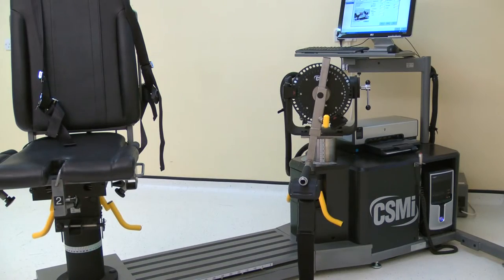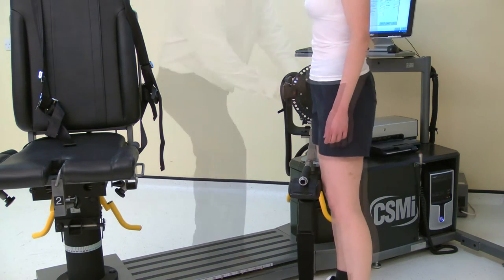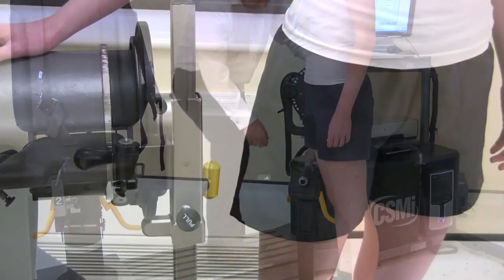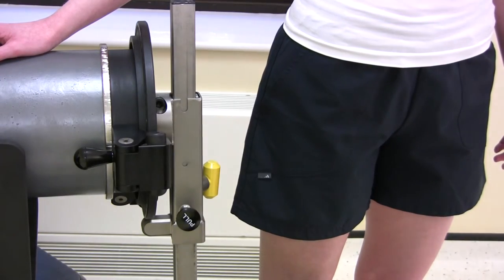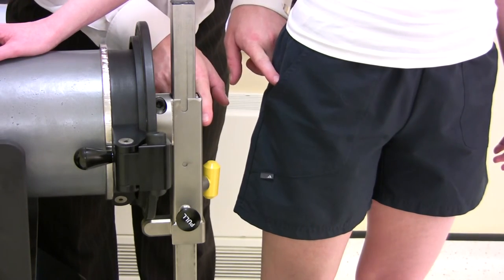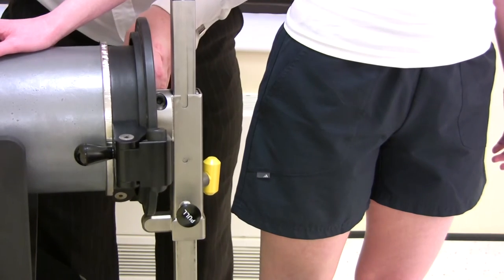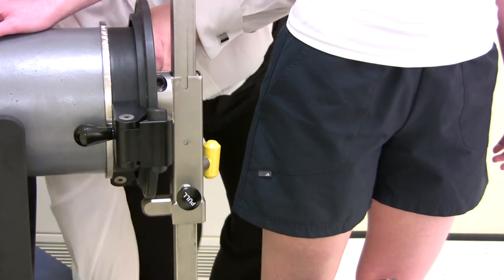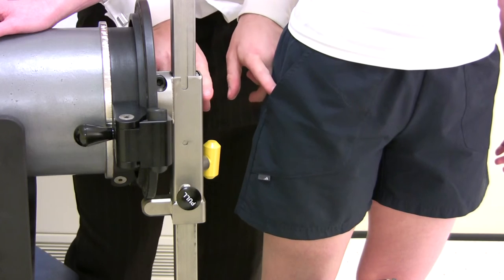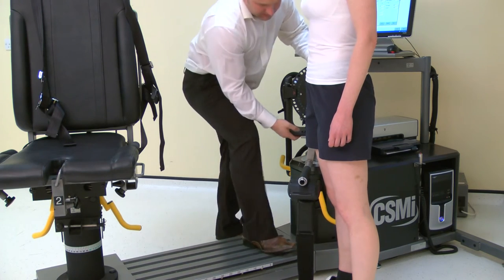Ask the subject to stand next to the dynamometer. Now the axis of rotation needs to be set. The axis for the joint needs to be directly opposite the black dot on the input arm. The axis of rotation for the hip is superior and medial to the greater trochanter. The dynamometer height and subject position may need adjustment to achieve the alignment.